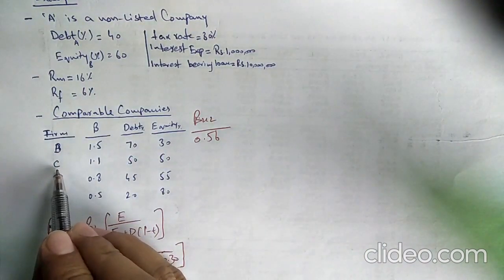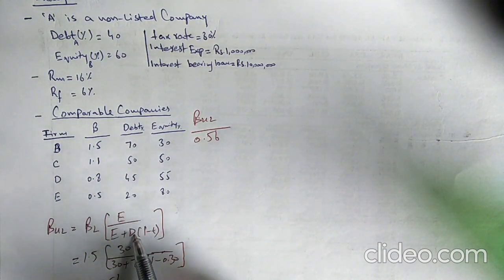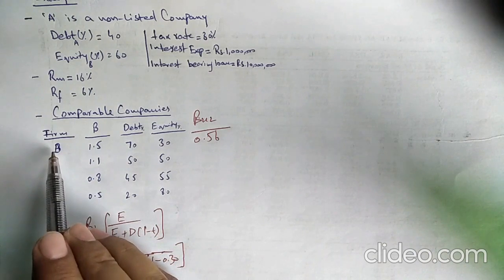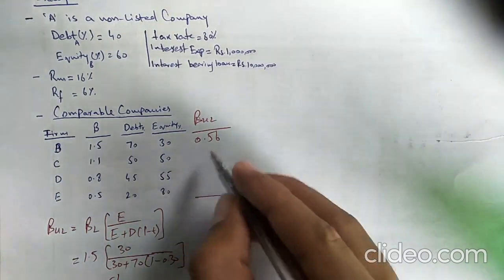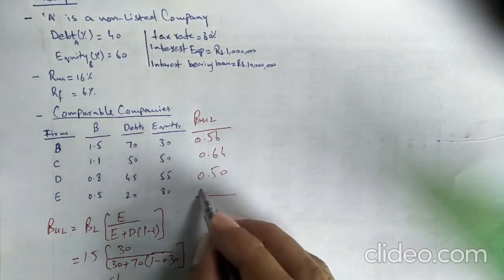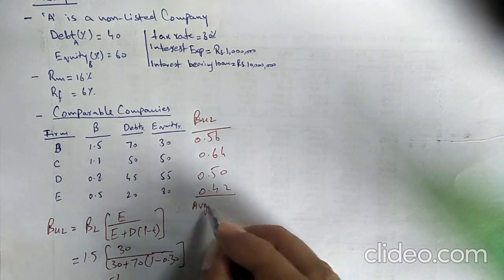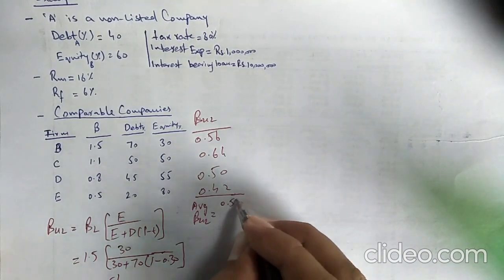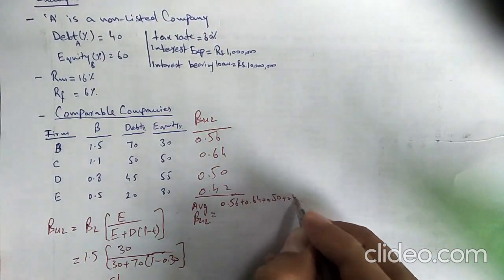I repeat the same procedure for C company, putting Beta_levered = 1.1, debt 50%, equity 50%, and tax 30%. Similarly, I have already calculated unlevered betas for the remaining companies: B = 0.56, C = 0.64, D = 0.50. Now I calculate the average unlevered beta by taking the simple average of all four values: 0.56, 0.64, 0.50, and 0.42.